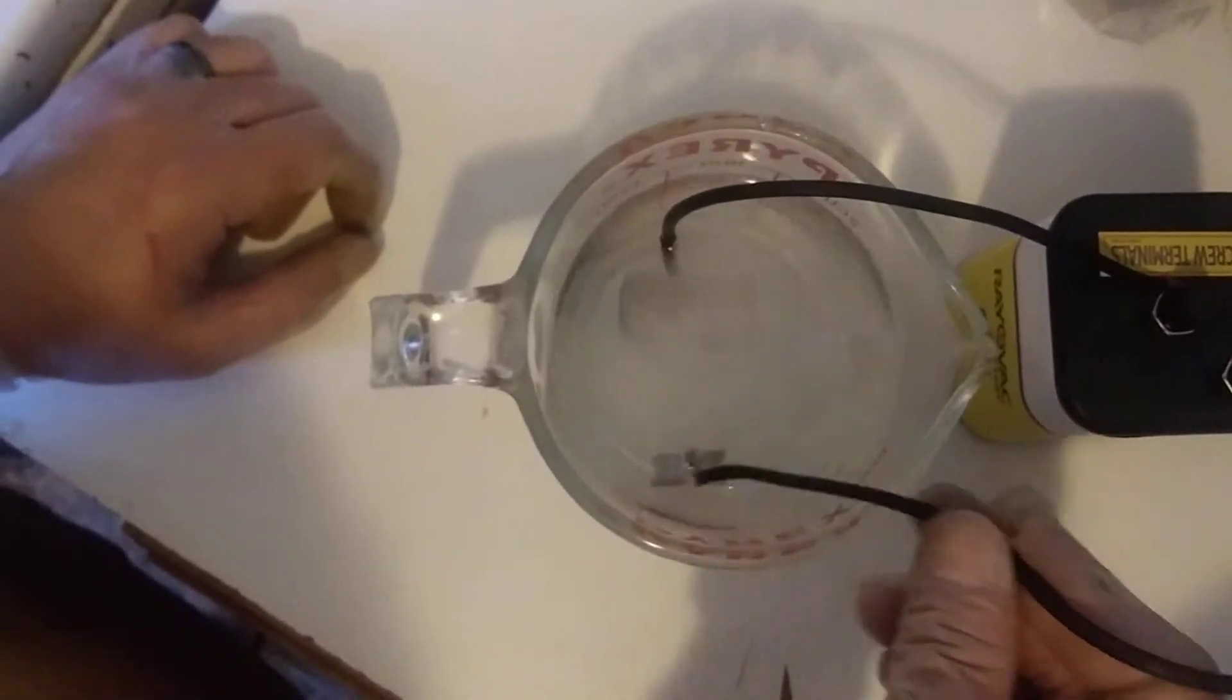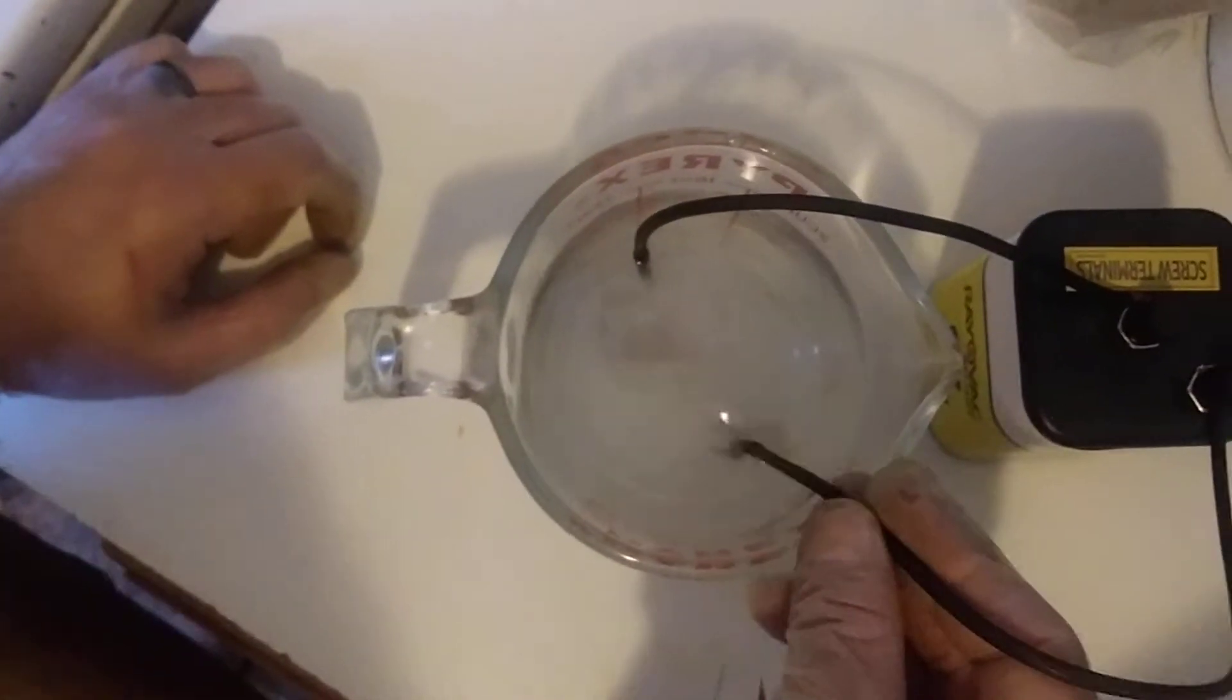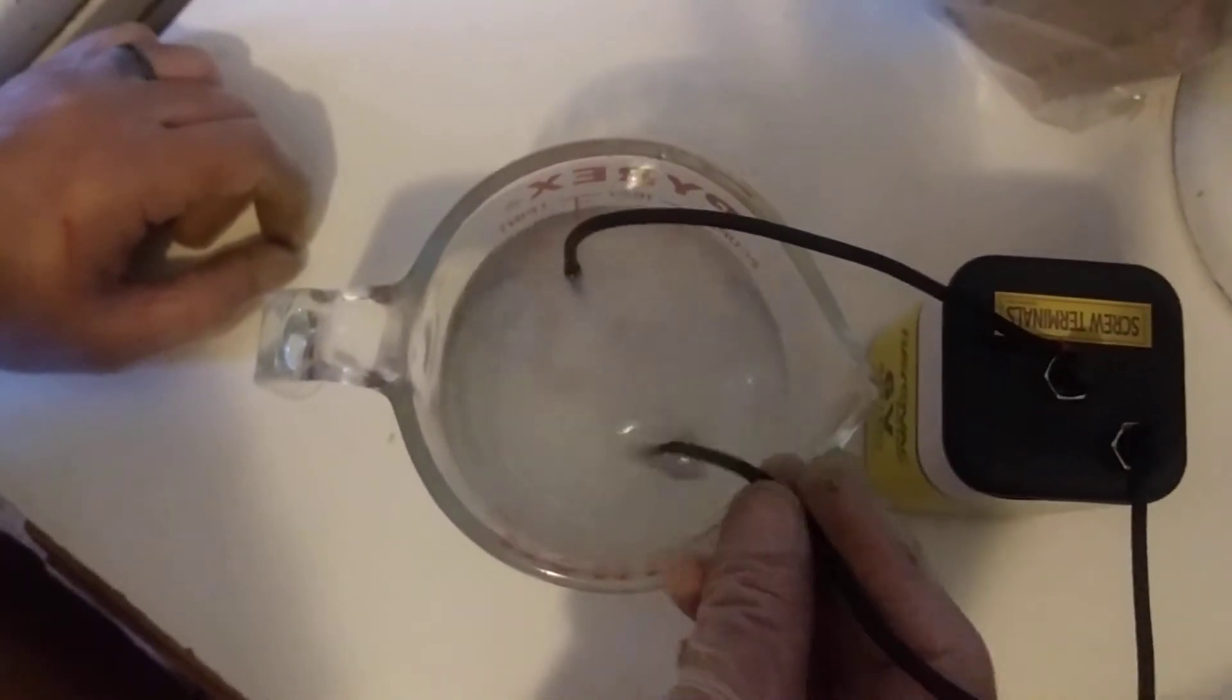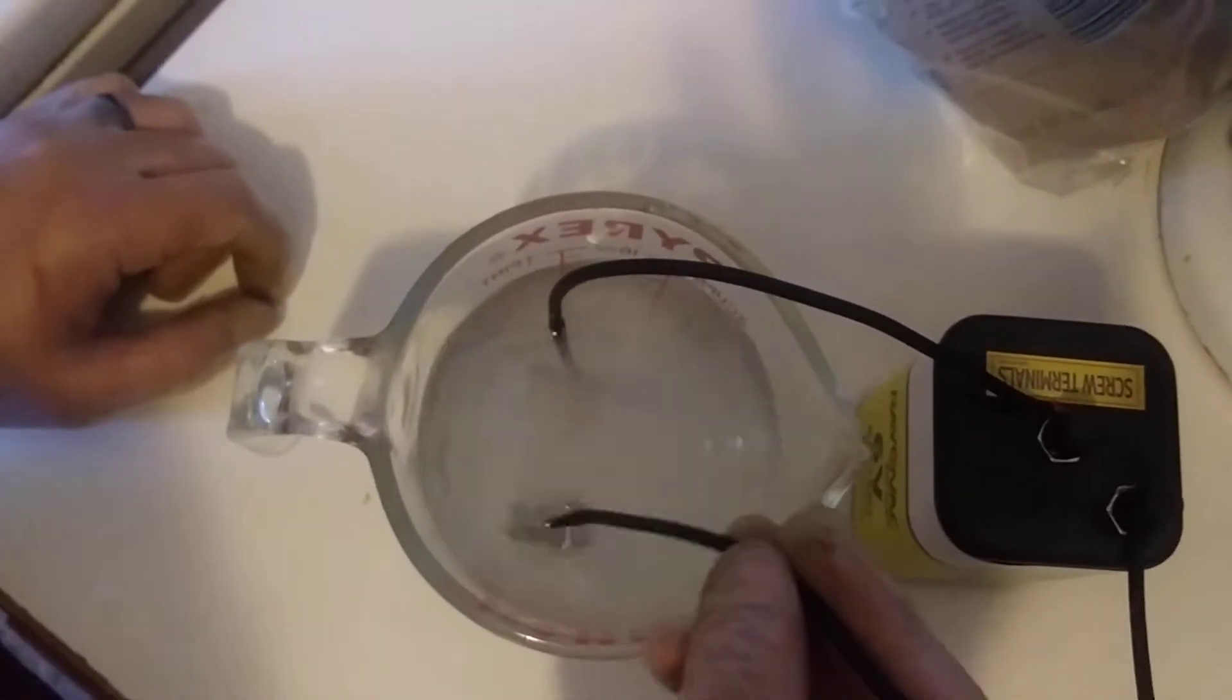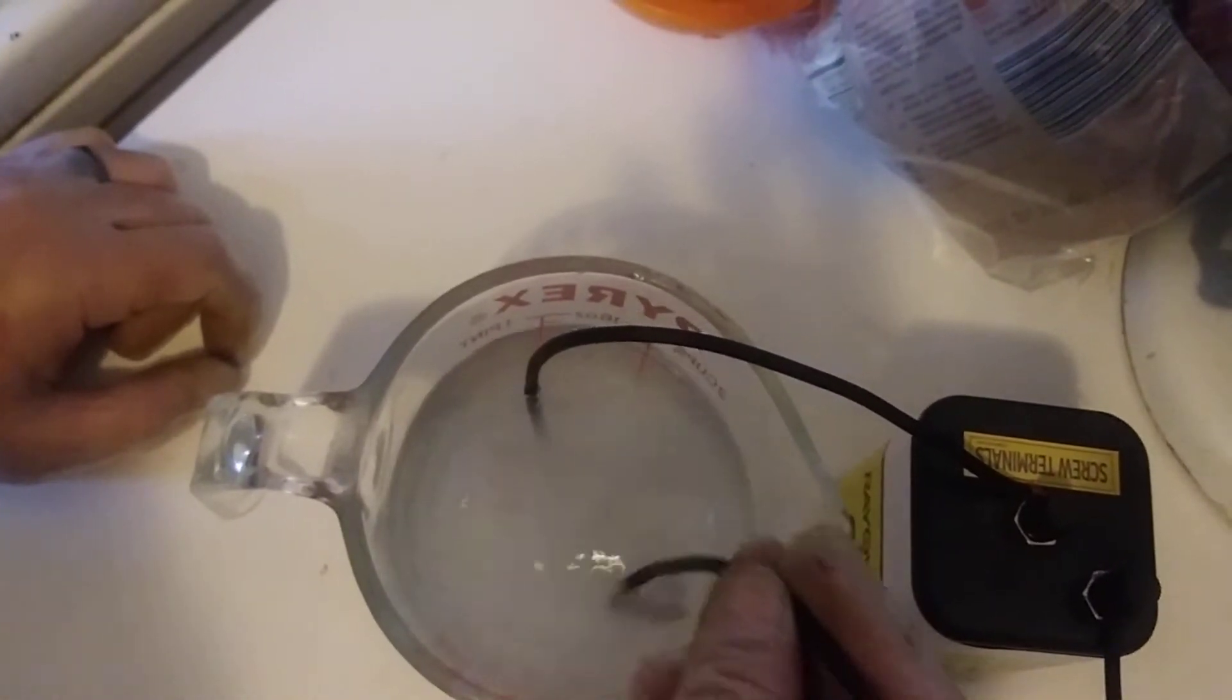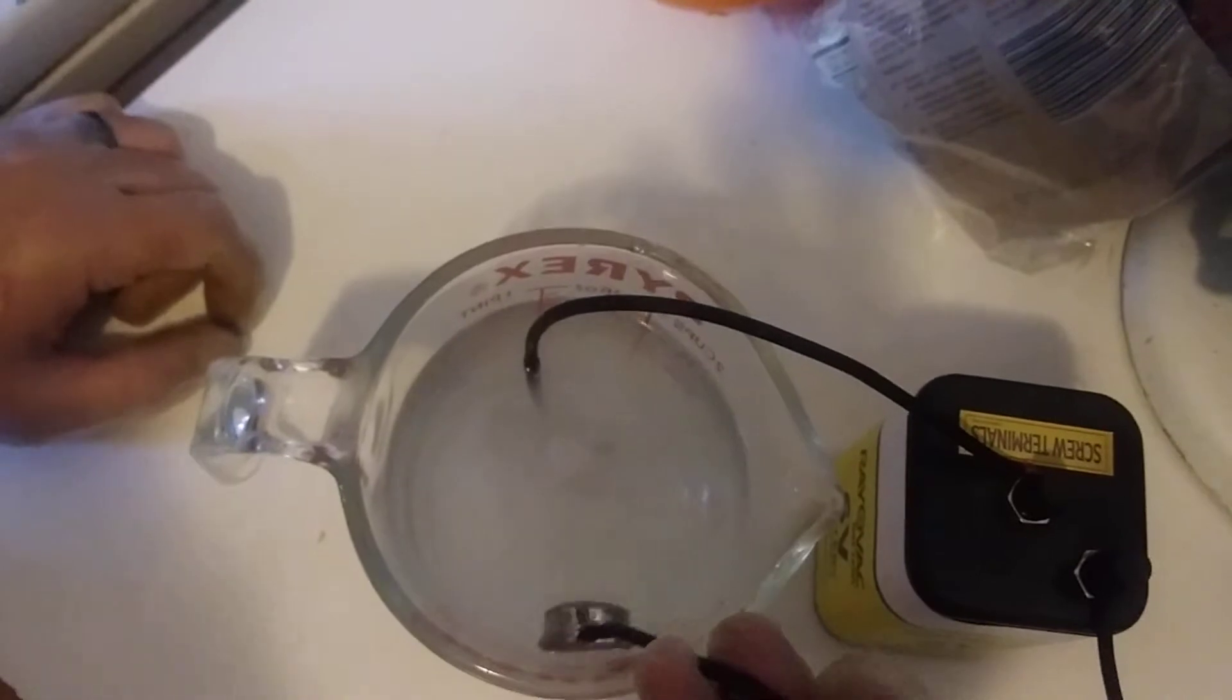We're just going to shake it a little bit more, just a few more minutes. Very easy process to de-chrome parts, just to reveal the copper layer underneath.